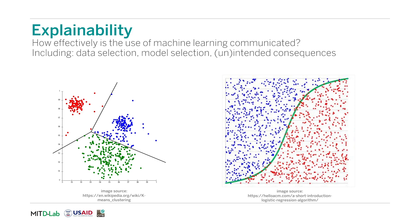The fourth criterion is explainability. How effectively is the use of machine learning communicated? It is important to ensure that the application is explained to end users in a way that is effectively communicating how outcomes were determined. Organizations seeking to apply machine learning outcomes without understanding the nuances of how models make decisions may use algorithm outputs inappropriately. Looking back at the earlier example of gender differentiated credit scoring from the previous module, an explainable solution could include information on why a specific individual was denied a loan and which factors they could change in order to increase their credit worthiness.